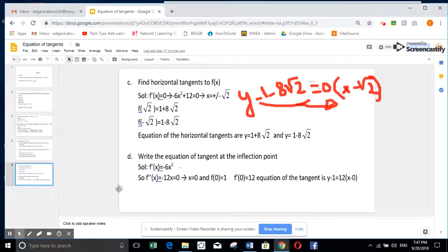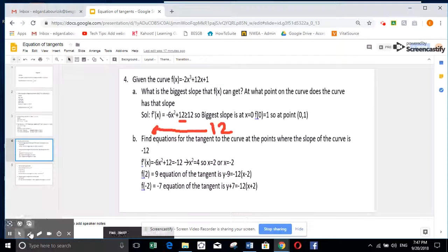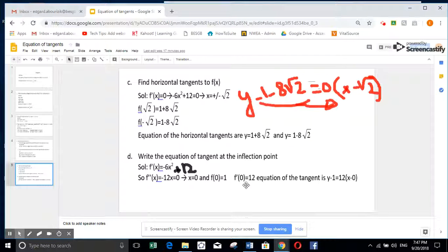This is the first derivative minus 6x squared plus 12. So here, if you do the derivative, second derivative, it will be minus 12x equals 0, implies x is 0. So if you replace in the equation f of 0, you get 1. So we have the inflection point at 0, 1. We get it by solving second derivative equal to 0.